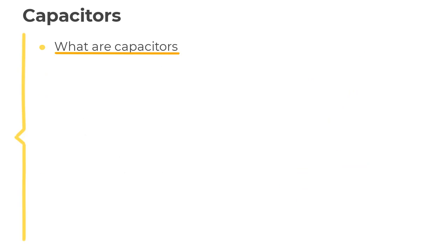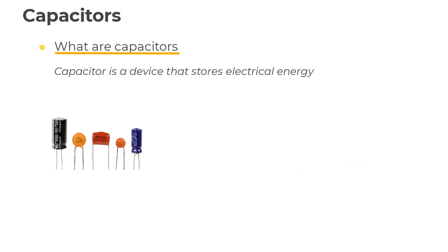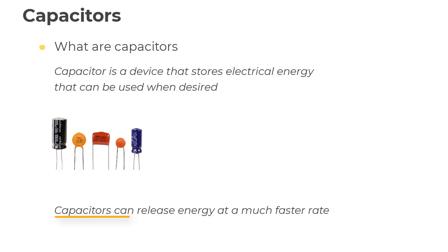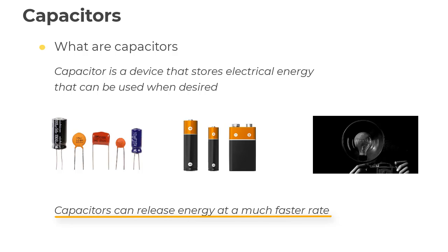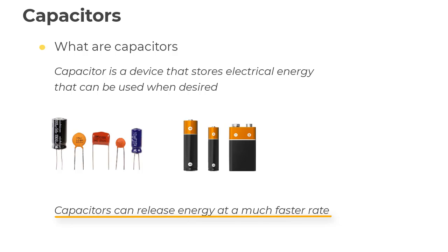In simple words, a capacitor is a device that stores electrical energy that can be used when desired. You might say that a battery also does the same thing — so how are the two different? The answer is that capacitors can release energy at a much faster rate than batteries, and that's what makes them unique. For example, a flash bulb requires a quick burst of energy that can be provided by a capacitor only.